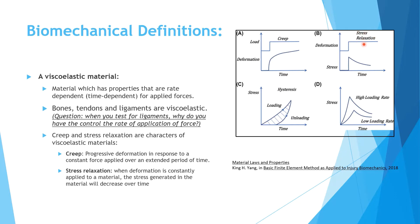Stress relaxation, on the other hand, means that when a deformation is held constant over a period of time, the resulting stress decreases within the material over time. In the curve, at a given point in time, a deformation is applied resulting in stress. The deformation does not increase over time, but the stress within the material decreases with time. Both creep and stress relaxation are properties of viscoelastic materials such as bone, tendons, and ligaments.